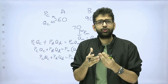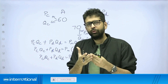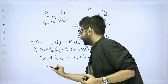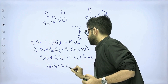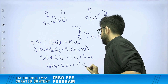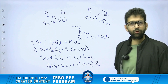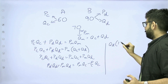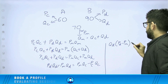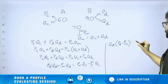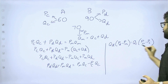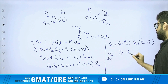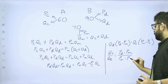Coming back to our original problem statement — what did the shopkeeper want? In what ratio should I mix both these brands? We want the ratio of QC to QD. Putting all like terms together: PD·QD − PM·QD = PM·QC − PC·QC. Taking out QD common gives PD − PM. Taking out QC common gives PM − PC. So that gives us QC/QD = (PD − PM) / (PM − PC).